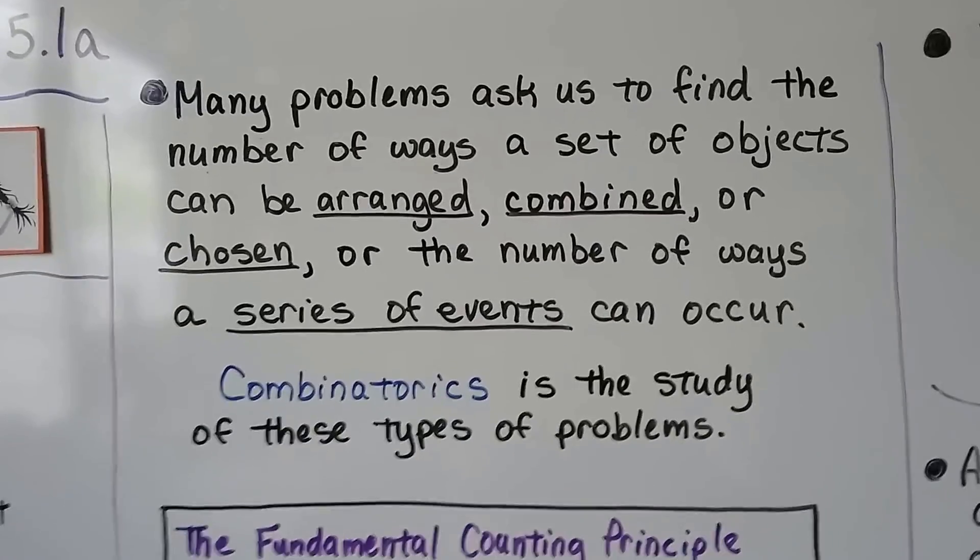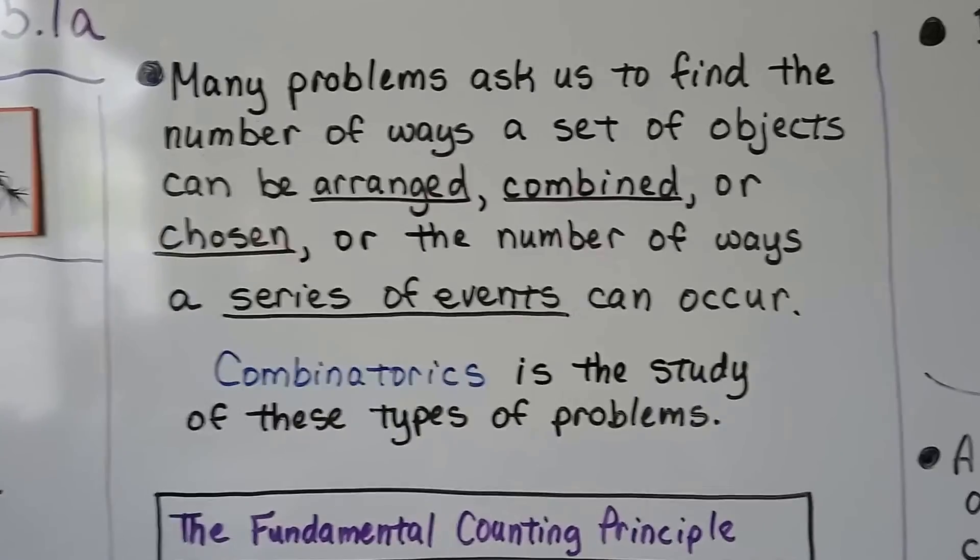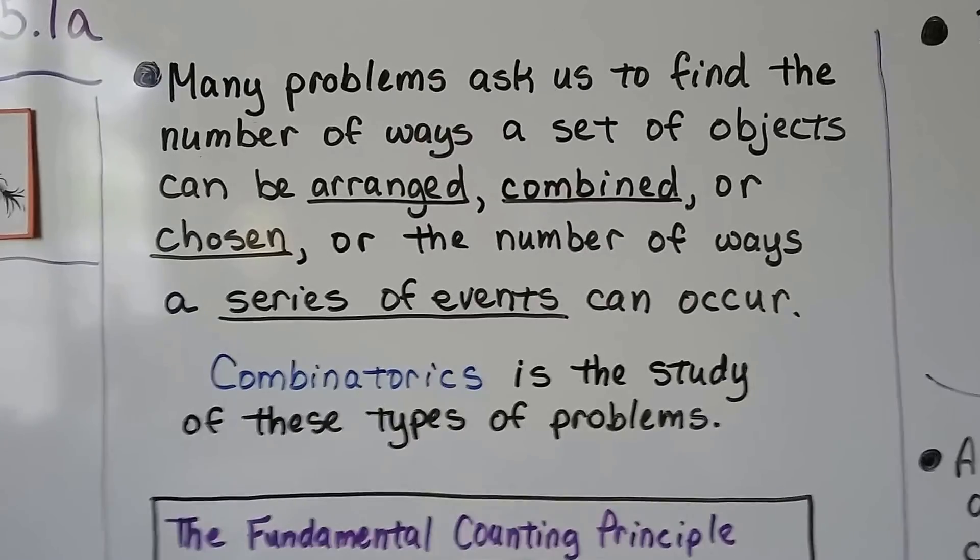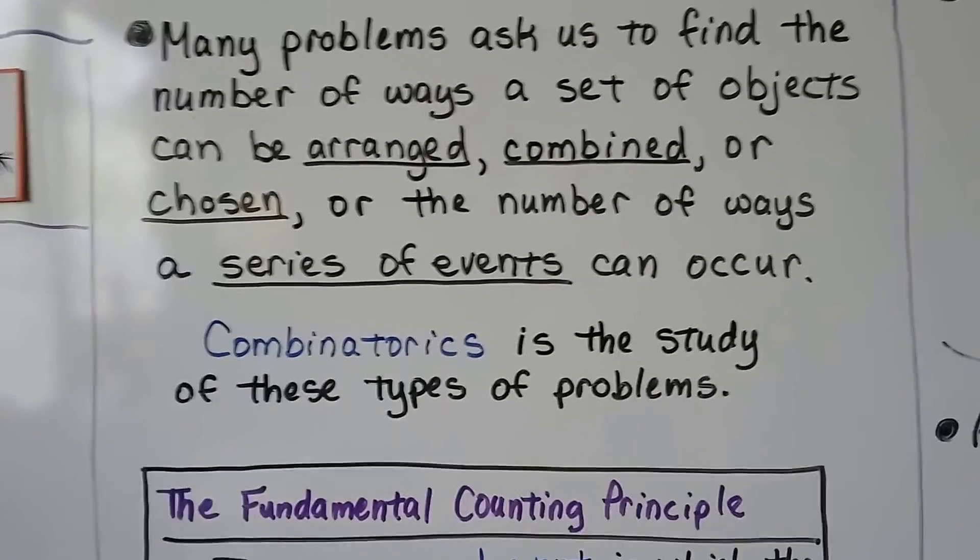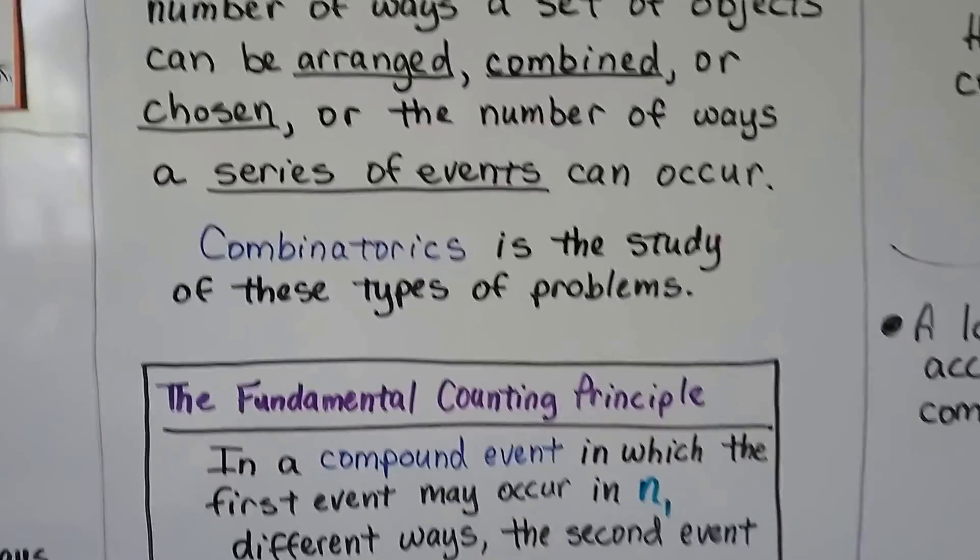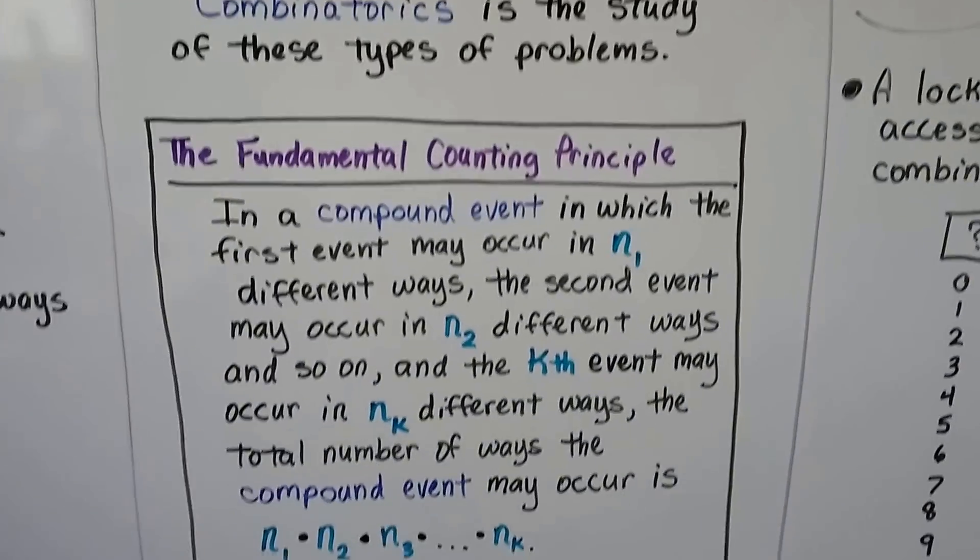Many problems ask us to find the number of ways a set of objects can be arranged, combined, or chosen, or the number of ways a series of events can occur. Combinatorics is the study of these types of problems. So here's the fundamental counting principle.